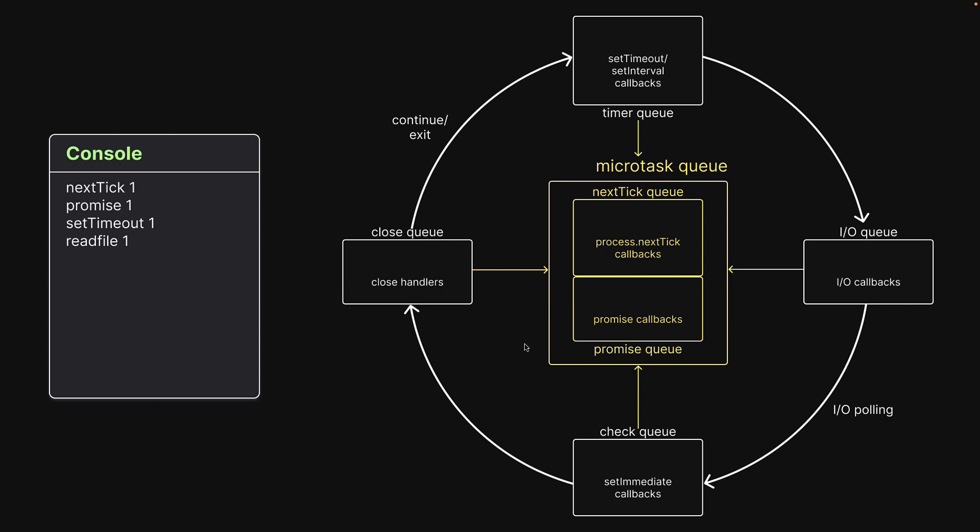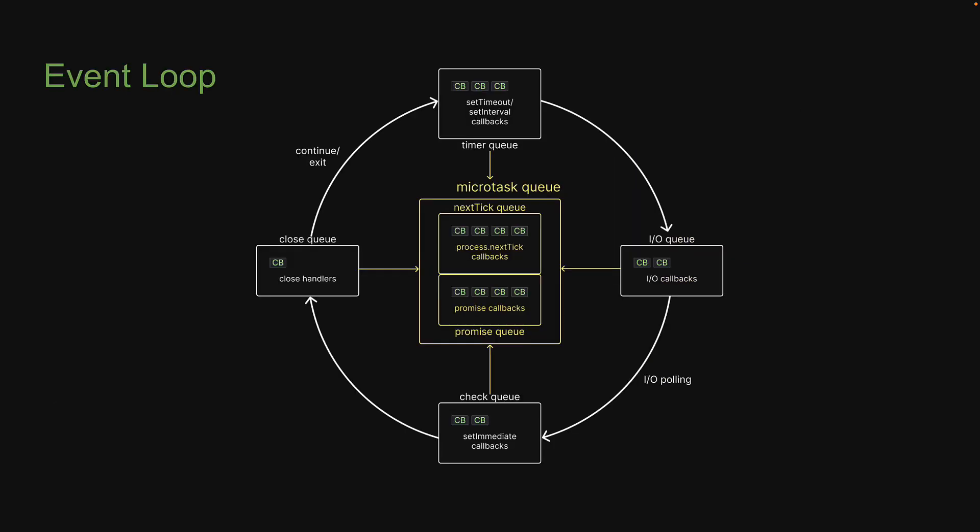Hopefully this makes sense. That covers the IO queue and its priority in the event loop. I'll see you in the next one.